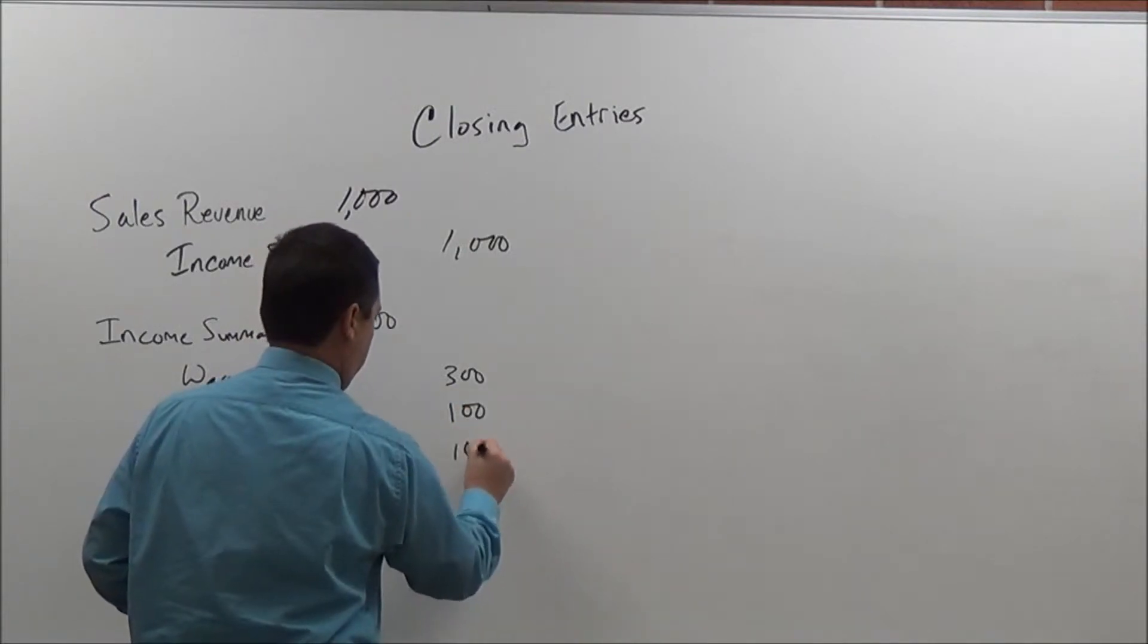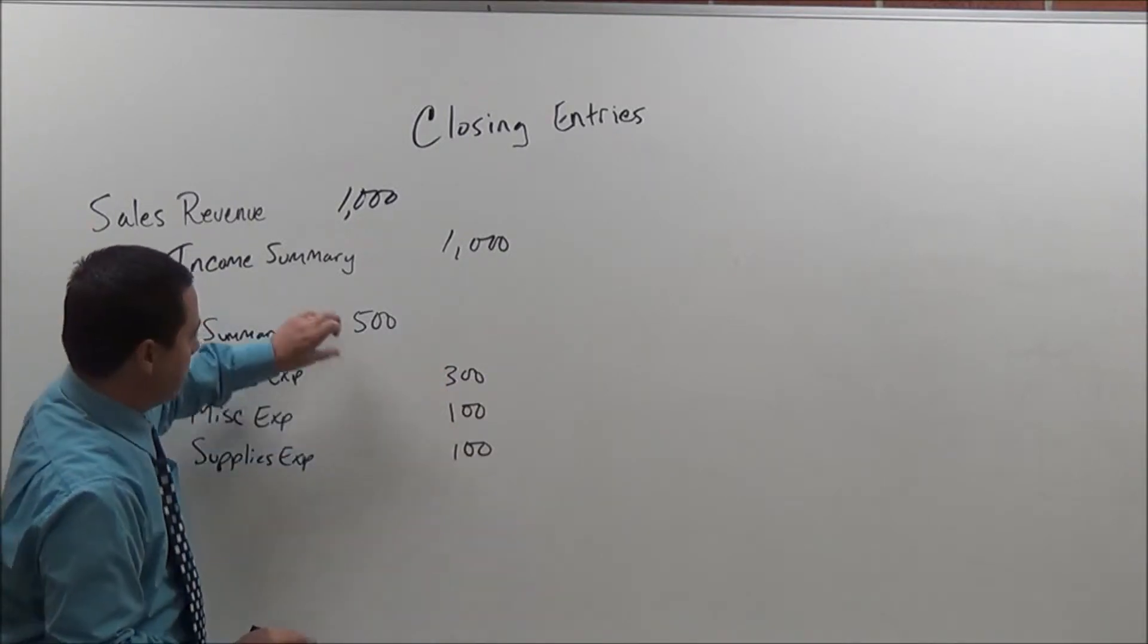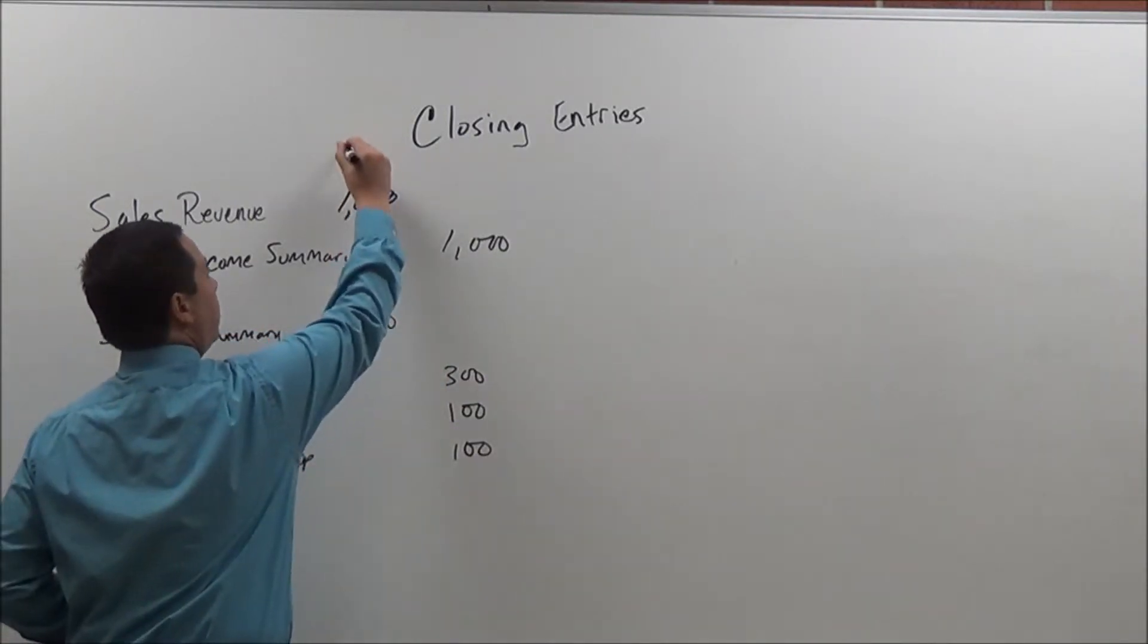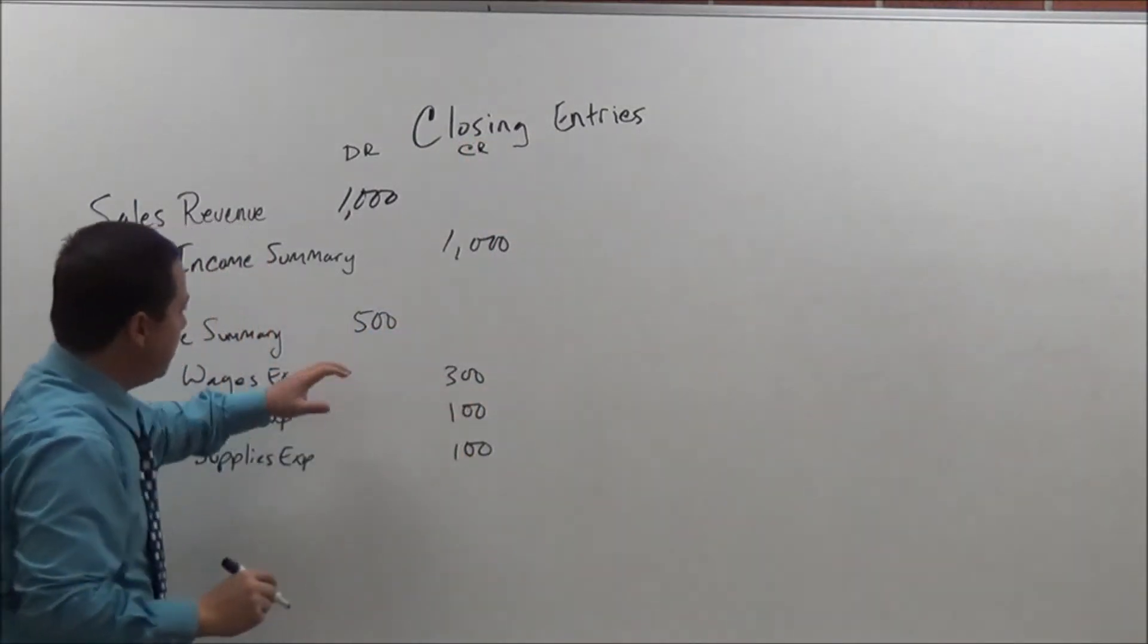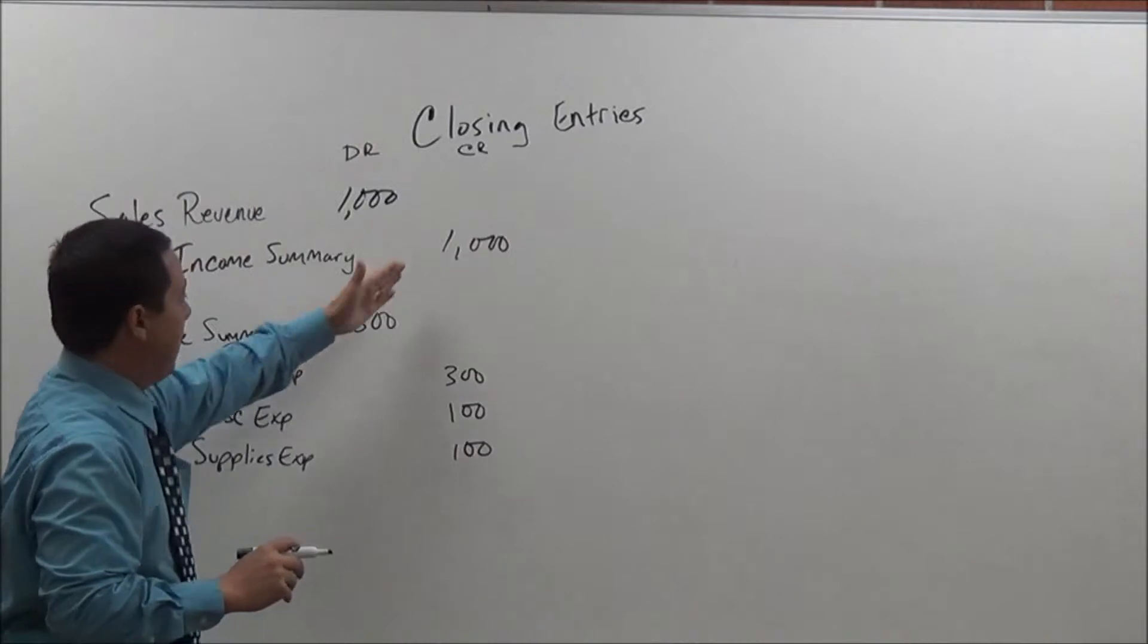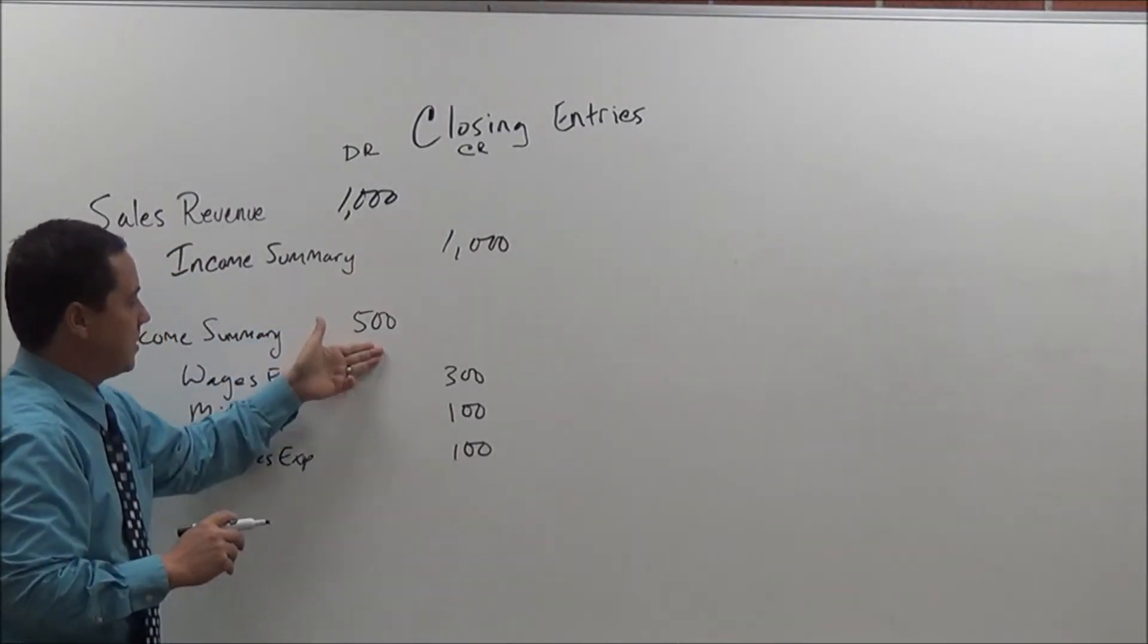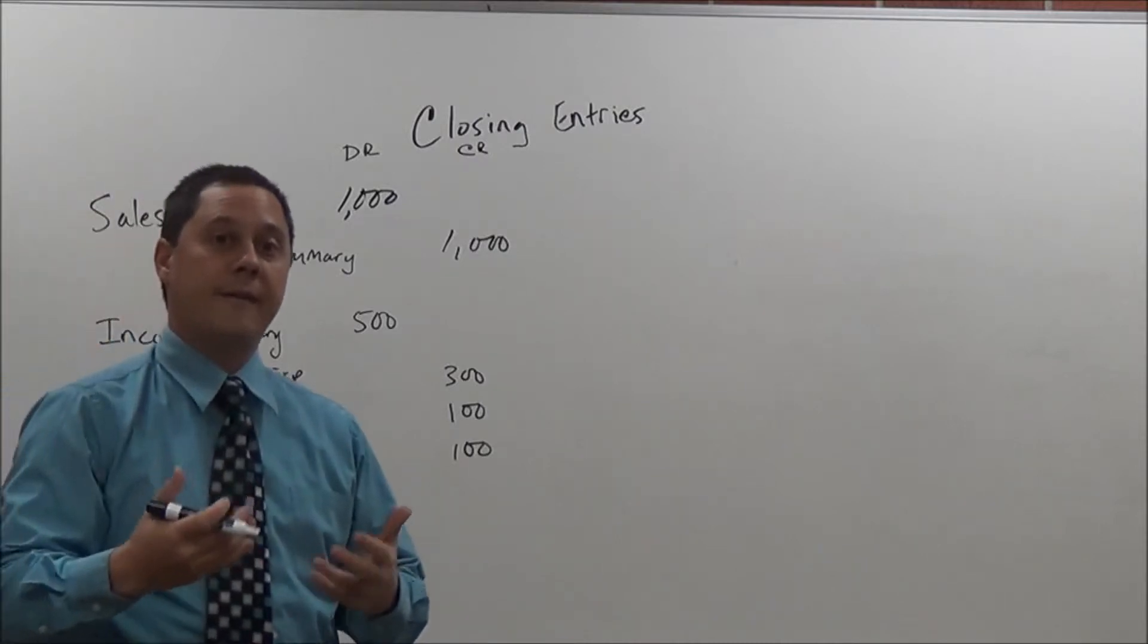So as you can see, this balances out. So now I have 500 credits and 500 debits here. So if you see here, two of my income summaries, I have a $500 difference. I have revenues of $1,000, expenses of $500. So I have a profit of $500.